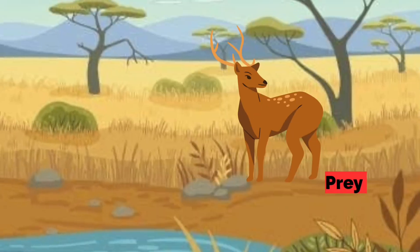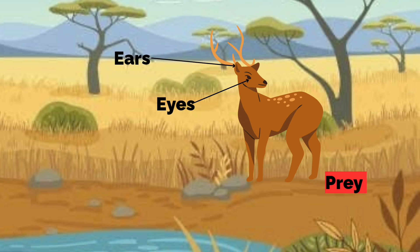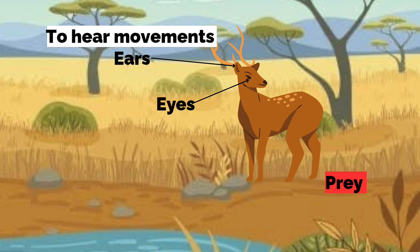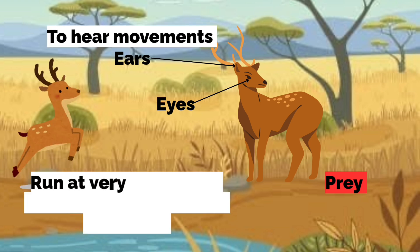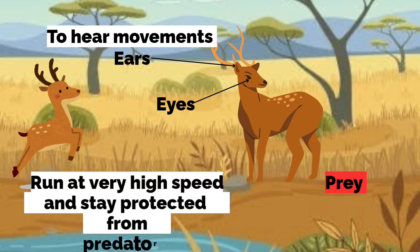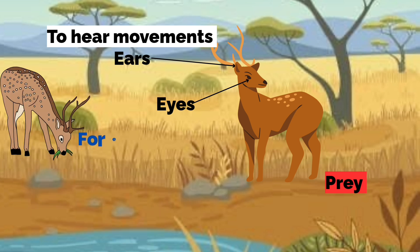Deer, on the other hand, have eyes on the sides of their face. They have long ears to hear movement around them, with which they can identify danger easily. They run at very high speed and stay protected from their predators. For eating grass, they have strong teeth.